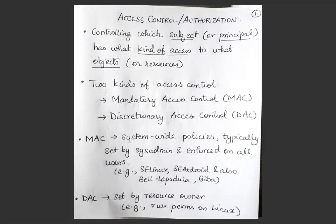Once you know who the subject asking to enter a computer system is, and with the identity of the subject established, authorization concerns itself with controlling whether the subject — a process or user, often called a principal — when it tries to access an object (a resource such as a file, socket, or device) and asks for a particular kind of access, whether that access should be allowed. If access should be denied, what mechanisms are used to deny that subject that kind of access to the object?